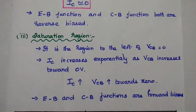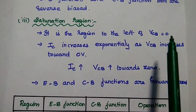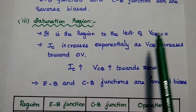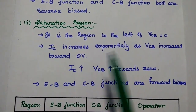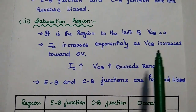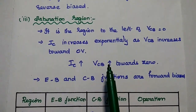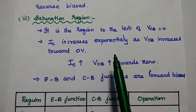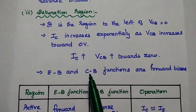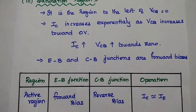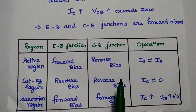In the saturation region, this is the region to the left of VCB equal to zero, that is the negative value of VCB. Here the collector current increases exponentially as the output voltage increases toward zero volts, and after zero volts it remains constant with respect to IE. In the saturation region, both emitter-base and collector-base junctions are forward biased.